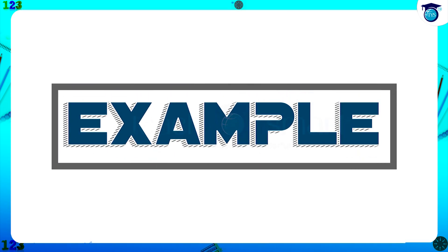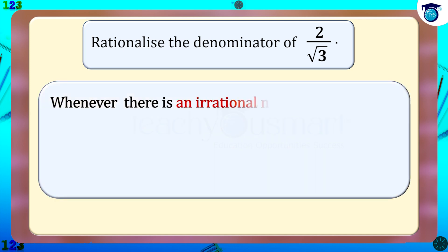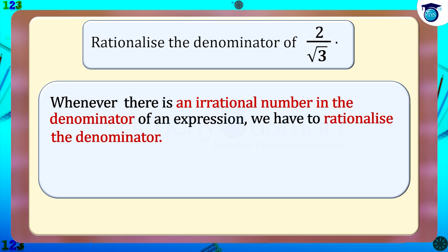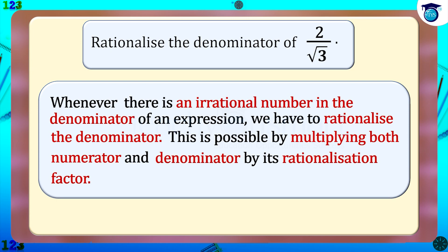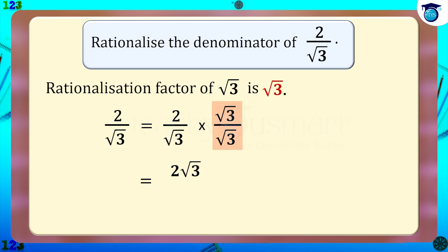For example, rationalize the denominator of 2 by √3. Whenever there is an irrational number in the denominator, we rationalize it by multiplying both numerator and denominator by its rationalization factor. Here, the rationalization factor of √3 is √3 itself. So we multiply both numerator and denominator by √3: 2/√3 multiplied by √3/√3 equals 2√3/3. Now the denominator is rationalized. This is the simplest method for rationalization of 2/√3.